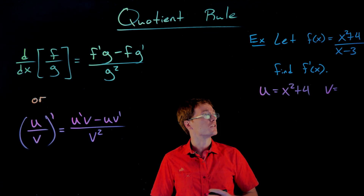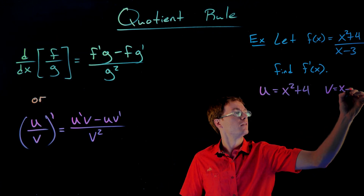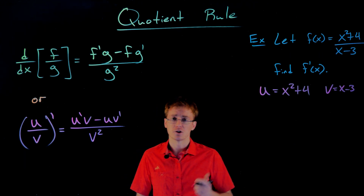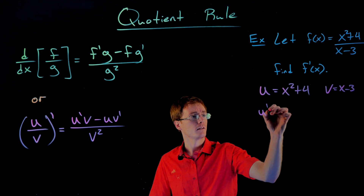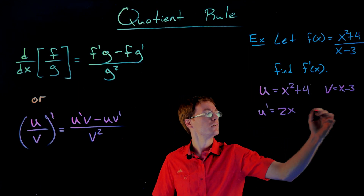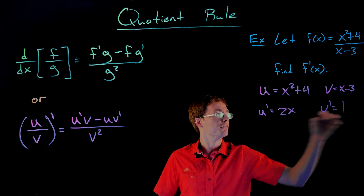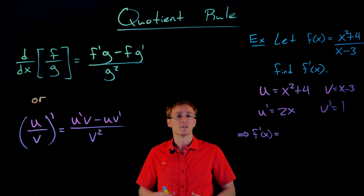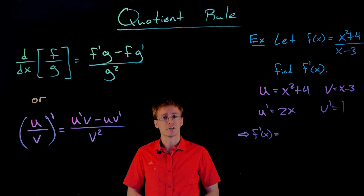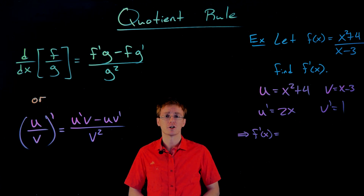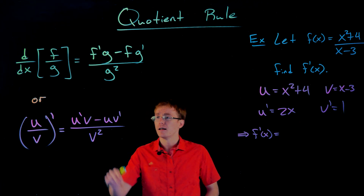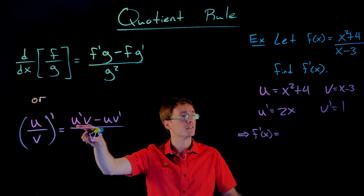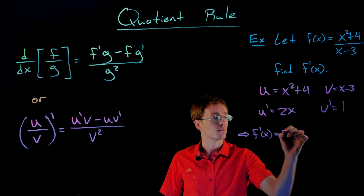v is the function in our denominator, that is x minus 3. Now we need the derivatives of these two functions. The derivative of u is going to be 2x, and the derivative of v is just going to be 1 — we find those using the power rule. Now we're going to put these four pieces together to construct the derivative. In the numerator we first look at the product of u prime and v, so it'll be 2x times x minus 3.